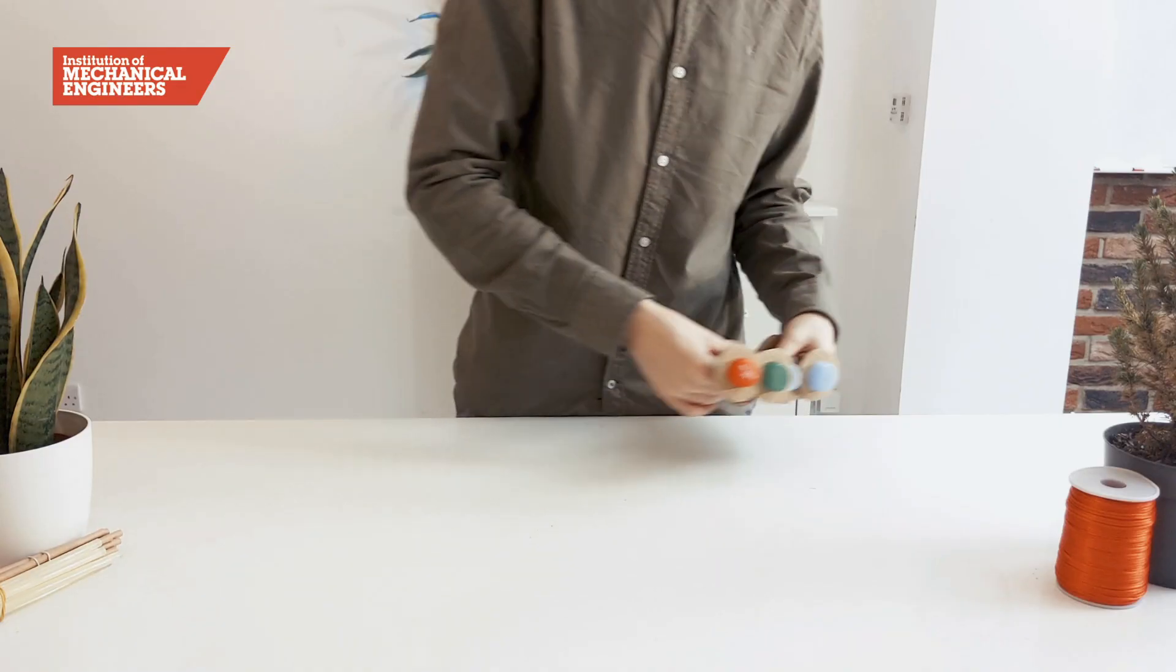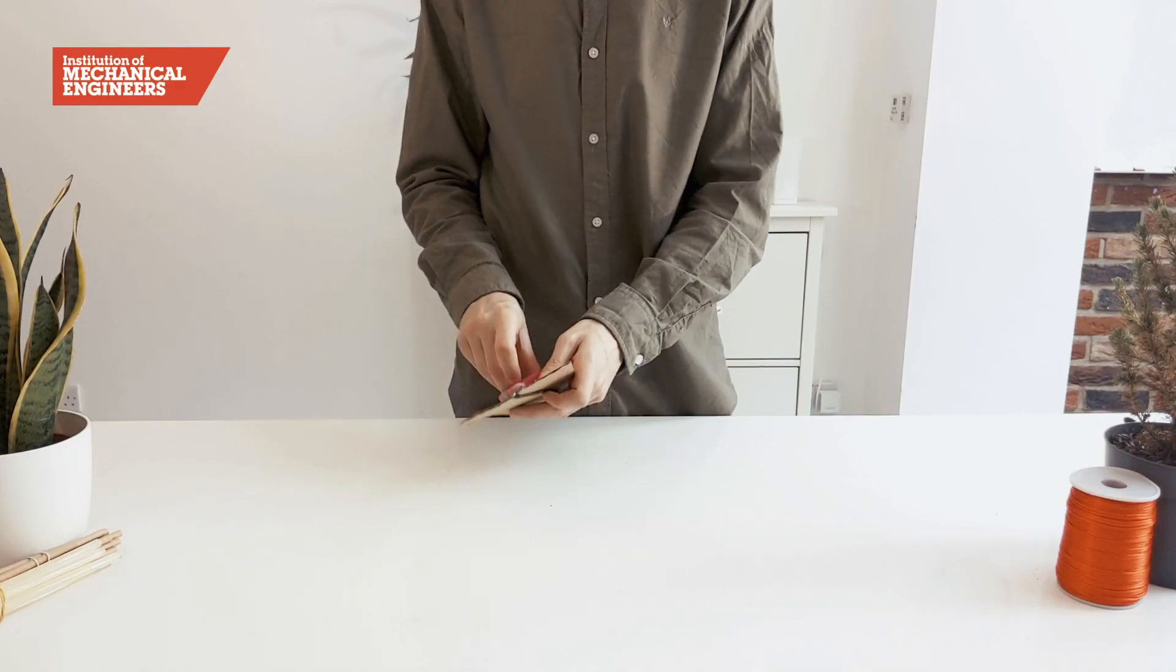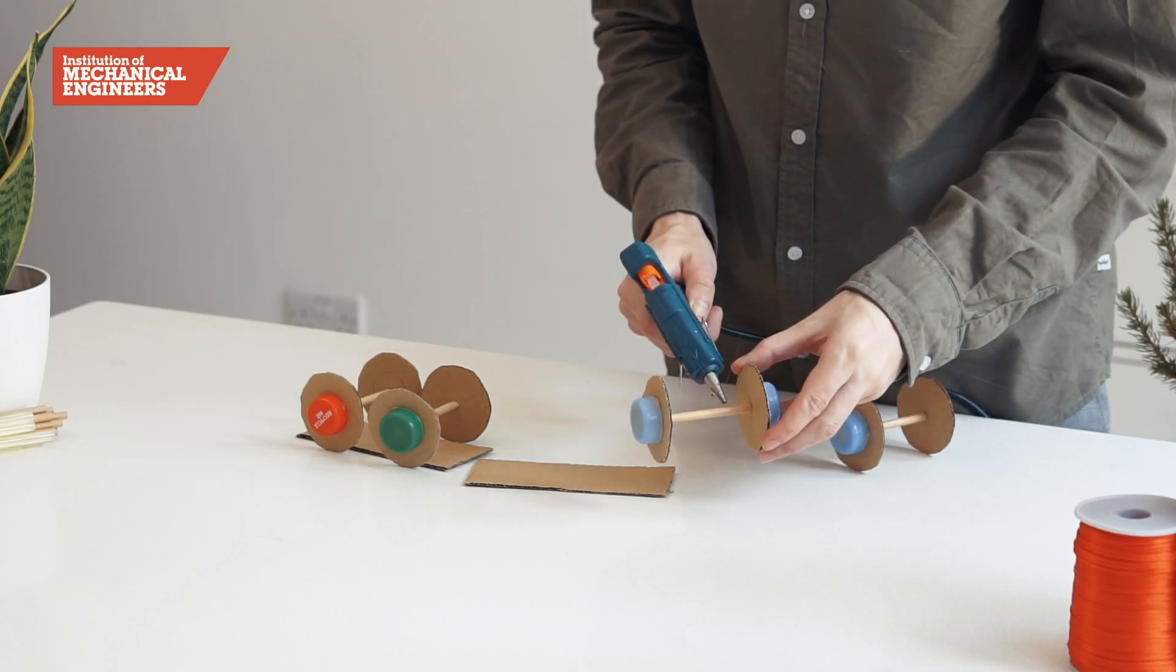It's time to put the train cars together. First cut out the card rectangles from the bases. Then glue two axles to each base.